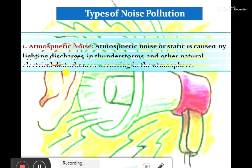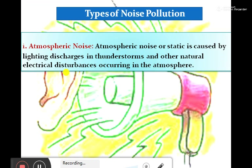Types of noise pollution. The first one is atmospheric noise. Atmospheric noise, or static, is caused by lightning discharge in thunderstorms and other natural electrical disturbances occurring in the atmosphere. This is called atmospheric noise. It occurs due to the rainy season, thunderstorms, and wind.